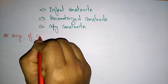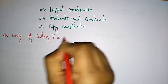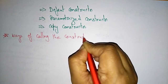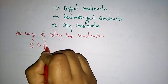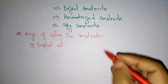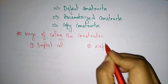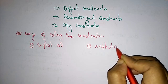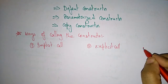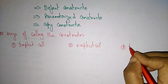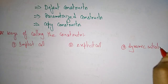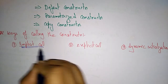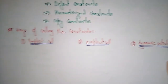The ways of calling the constructor — there are three: the first one is the implicit call, the second is the explicit call, and the third one is the dynamic initialization. These are the three different ways of calling a constructor.